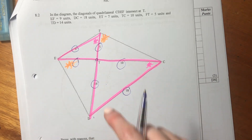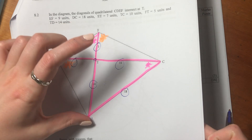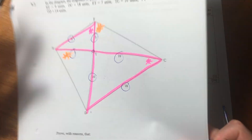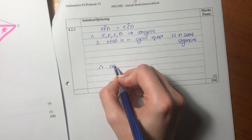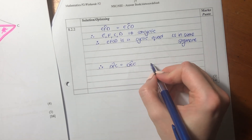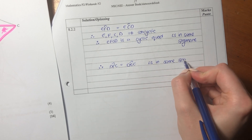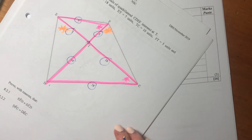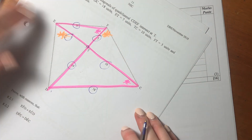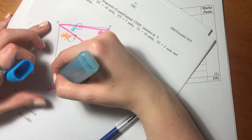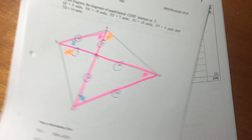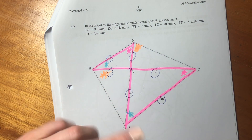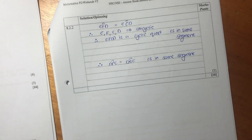Because EFCD is a cyclic quad, therefore angle DFC equals angle DEC — angles in the same segment. Now that we know it's a cyclic quad, those angles equal each other. What's also interesting is those other pairs of angles equal each other too, again because of the nature of the cyclic quad. So we're very used to being given a cyclic quad and then applying angles in the same segment, but here we're given it the other way around — the equal angles prove it's a cyclic quad first. That completes question 8; let's move on to question 9.